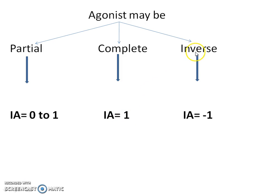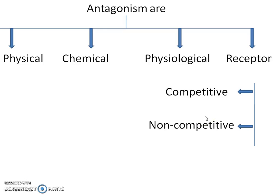An inverse agonist will bind to a receptor and shows an opposite pharmacological activity; therefore the IA value is equal to minus 1. Antagonists are classified as physical antagonism, chemical antagonism, physiological antagonism, and receptor antagonism.